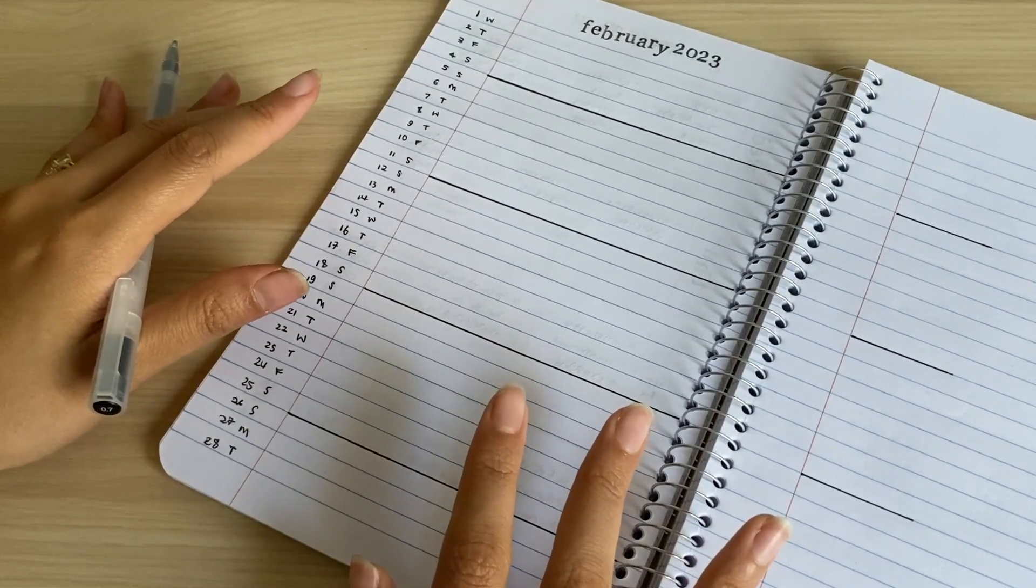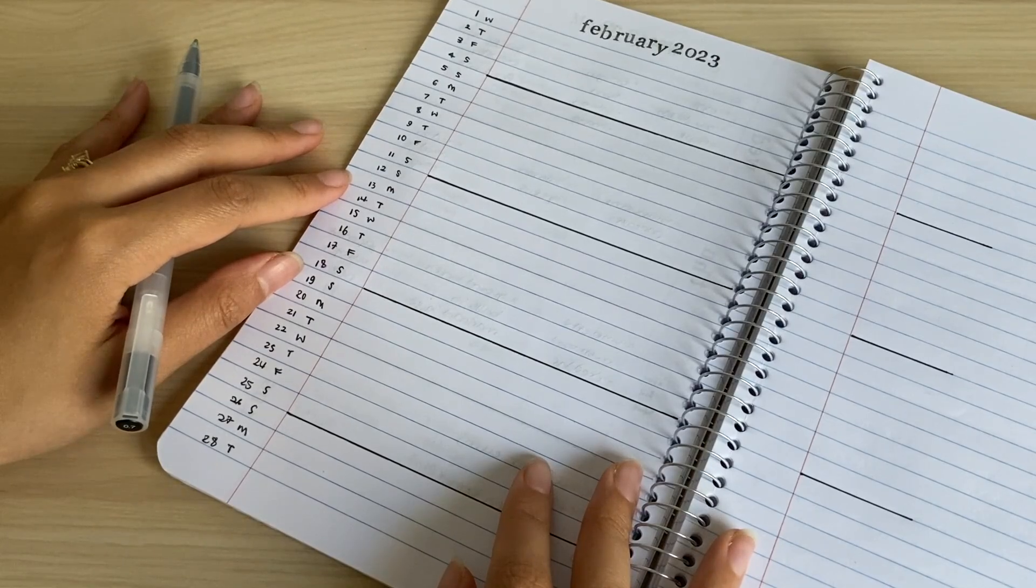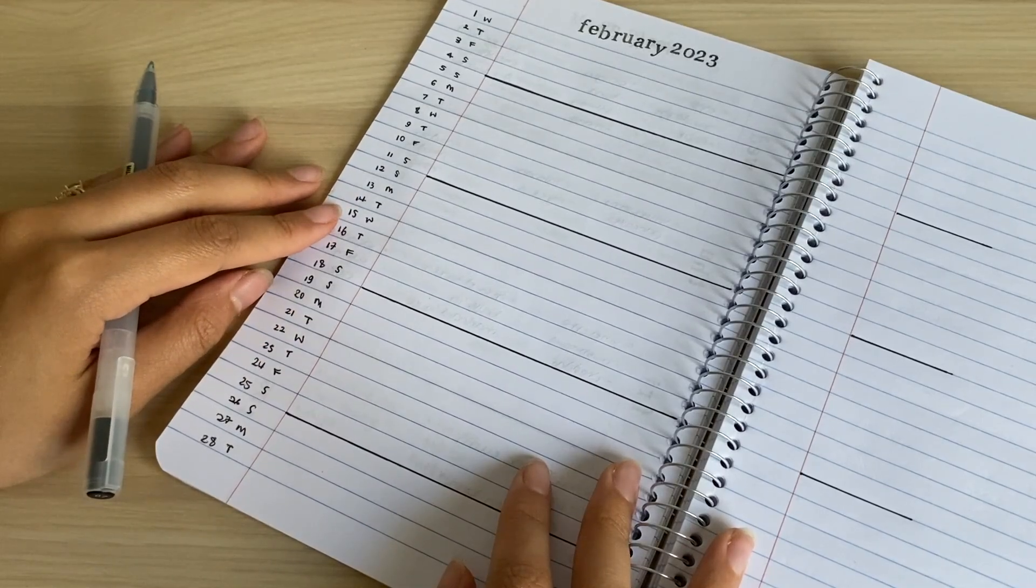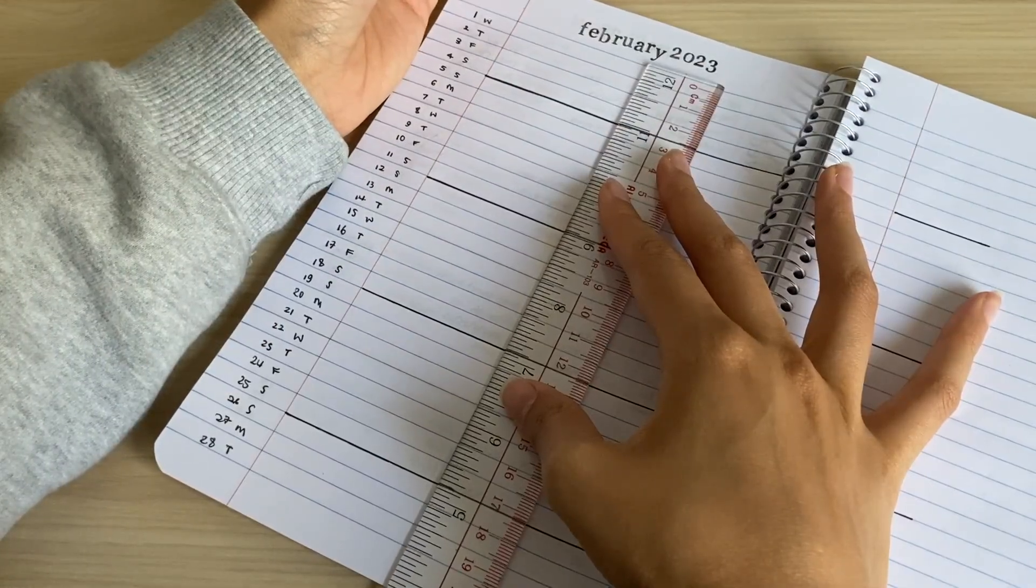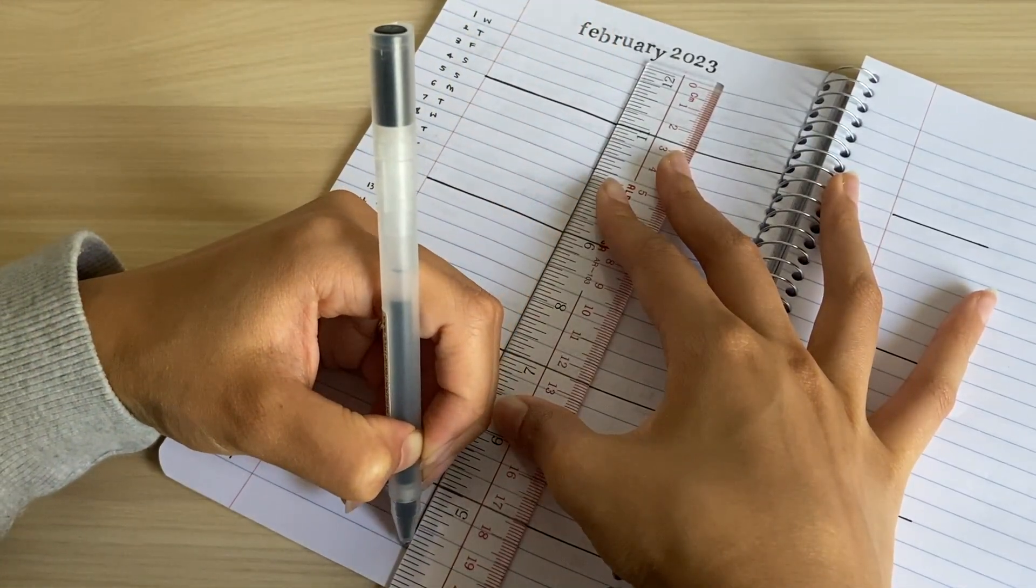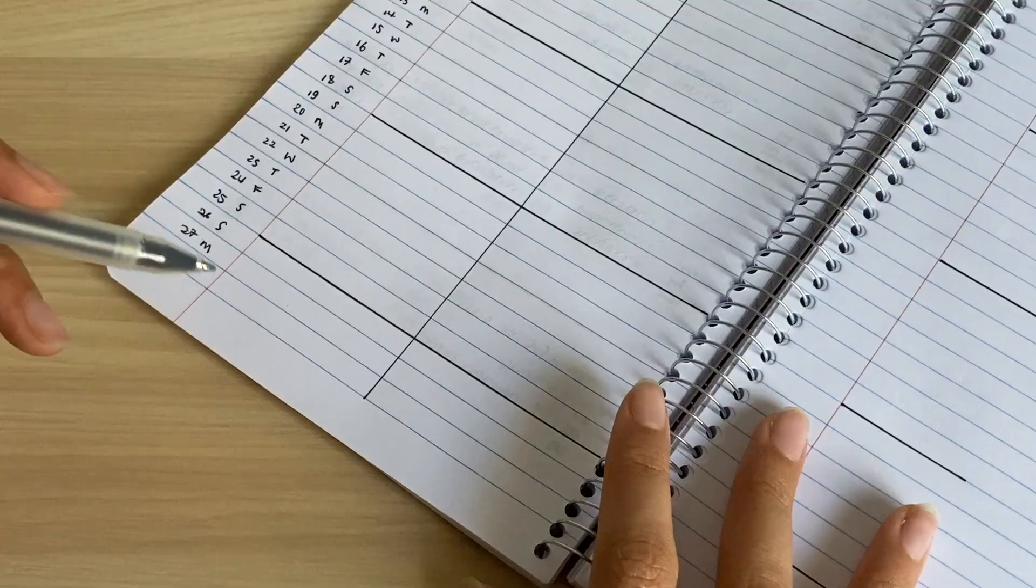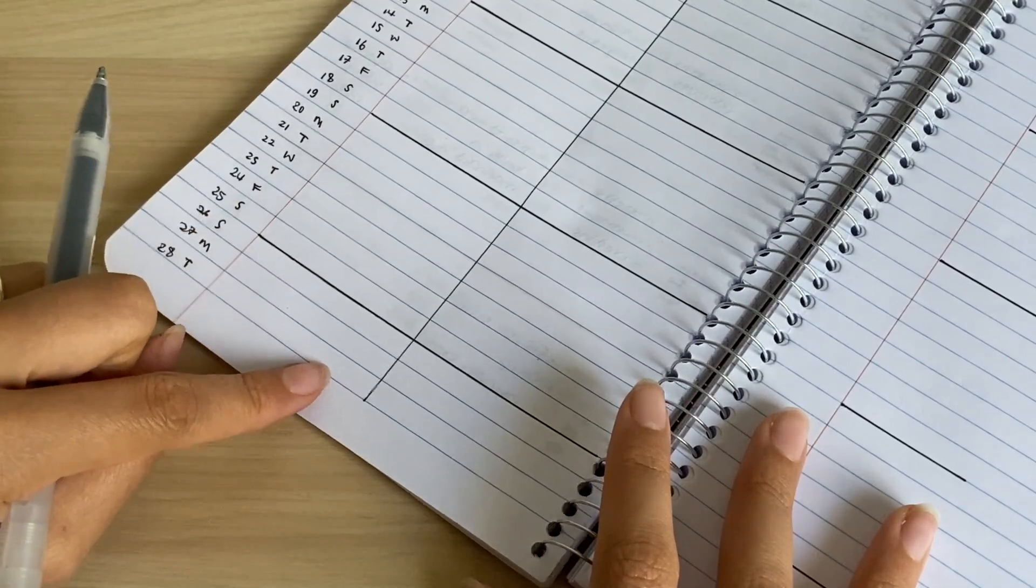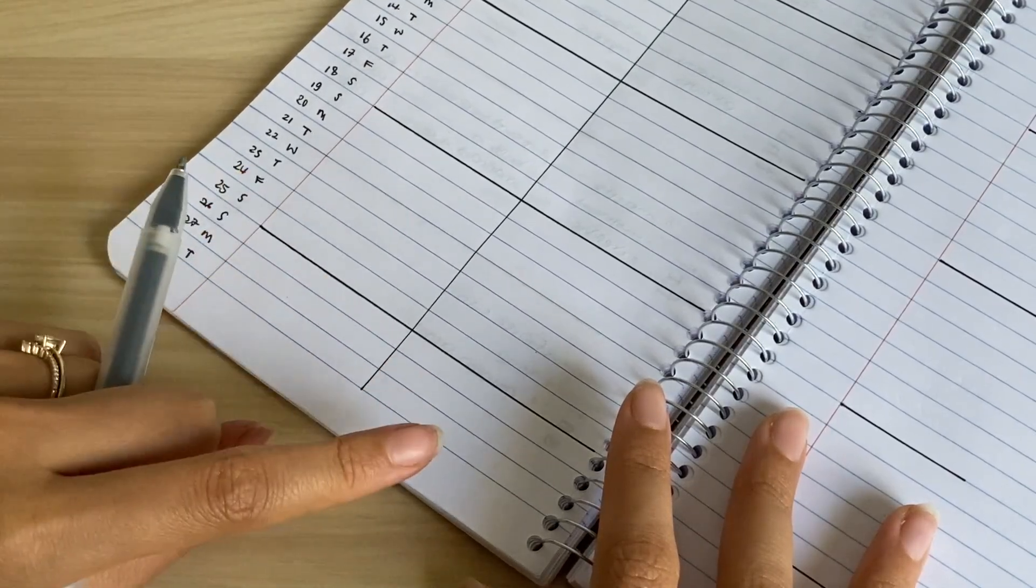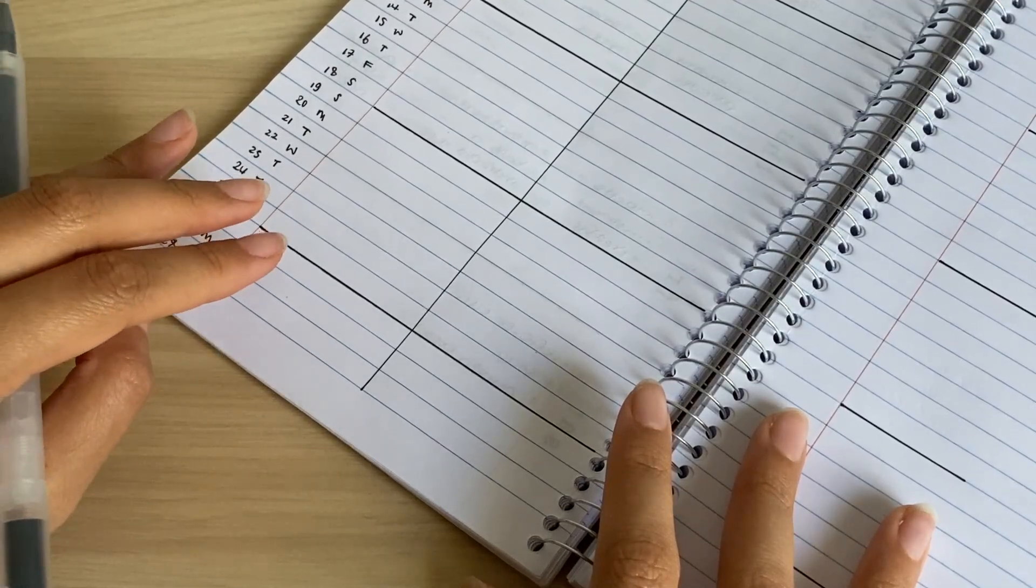This next part is certainly optional. This is only if you want further differentiation between the things you have going on for the month. You can draw a line down the center of this page and divide your monthly log into two columns. At the bottom of this page, you can write the headers for each column or category. So I'm going to write 'tasks' on this side and 'events' on this side.